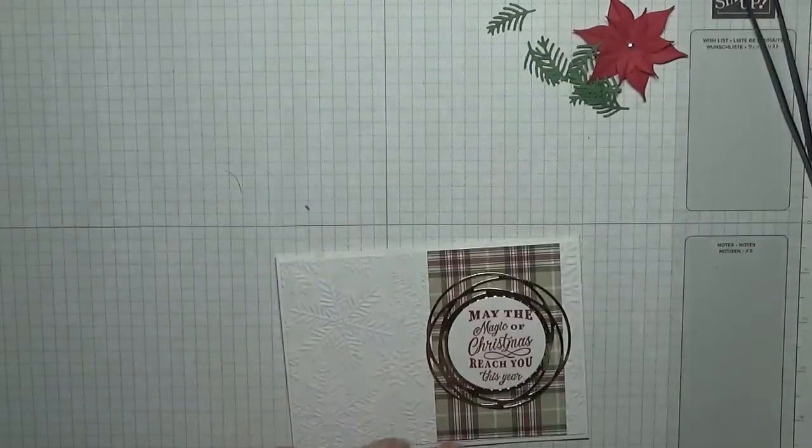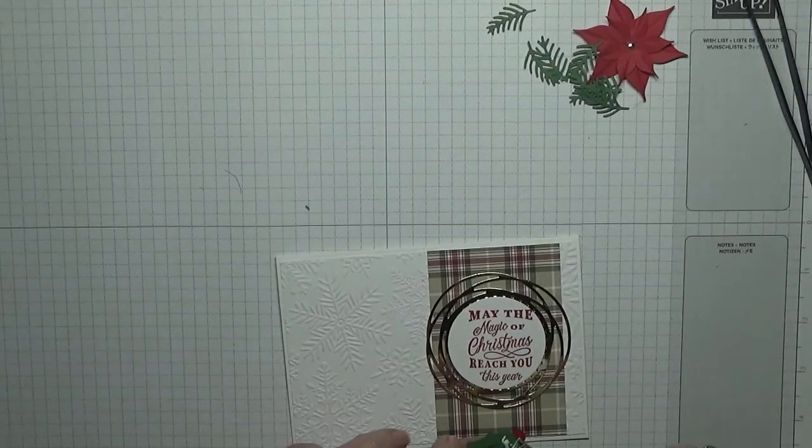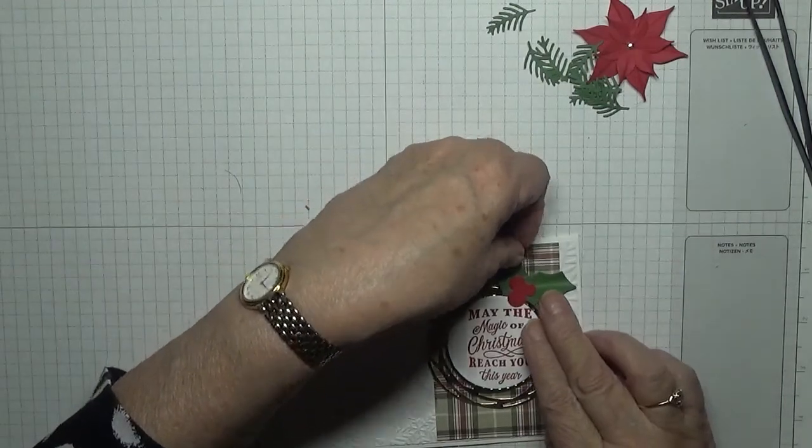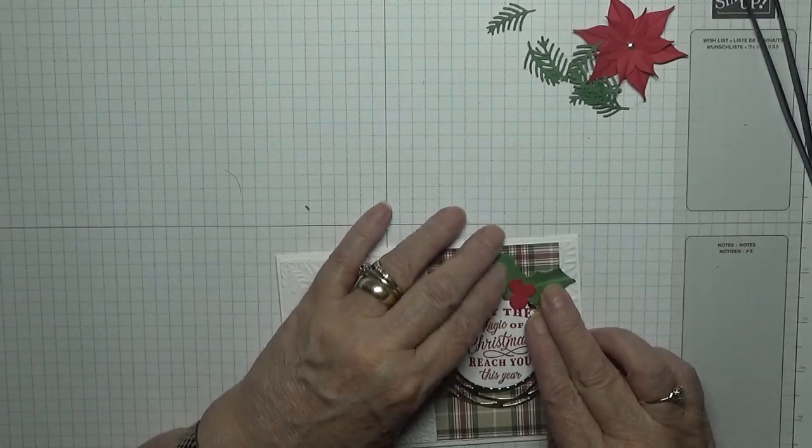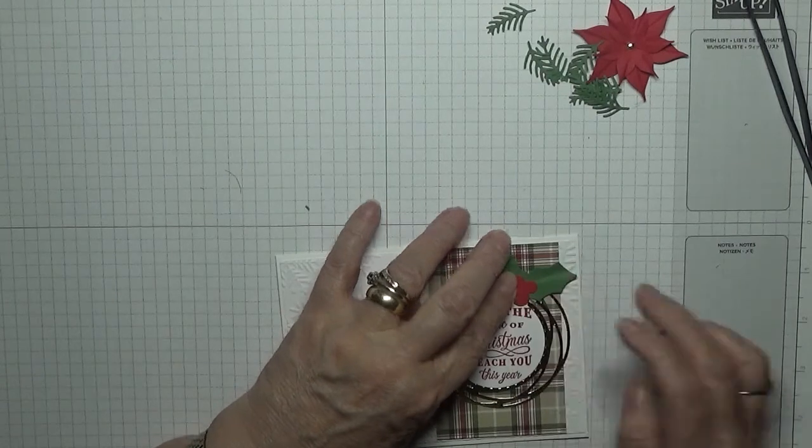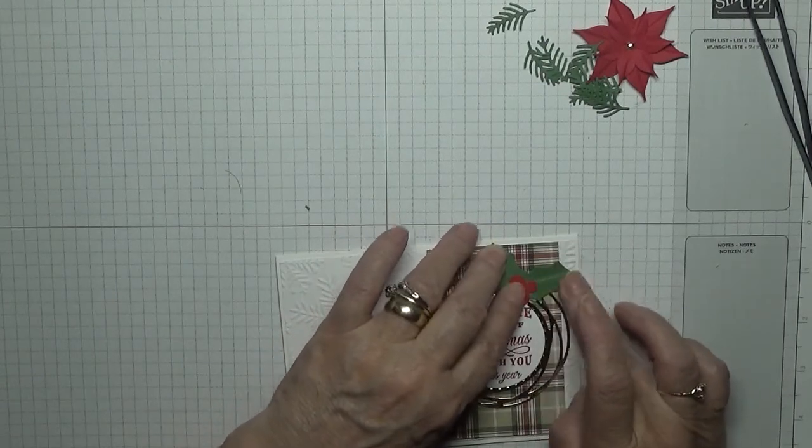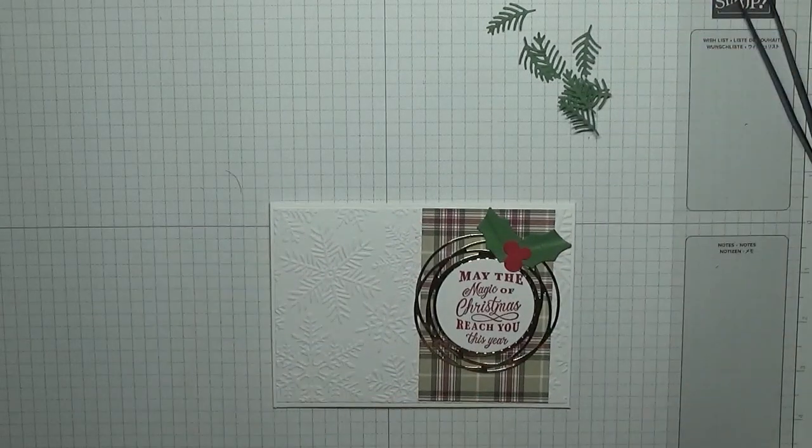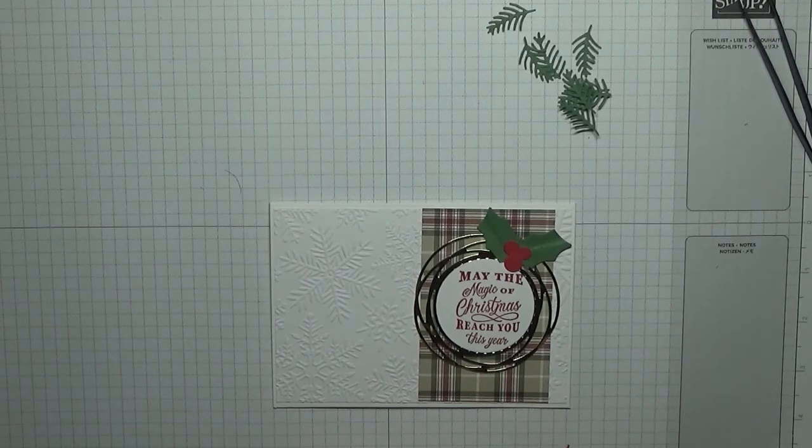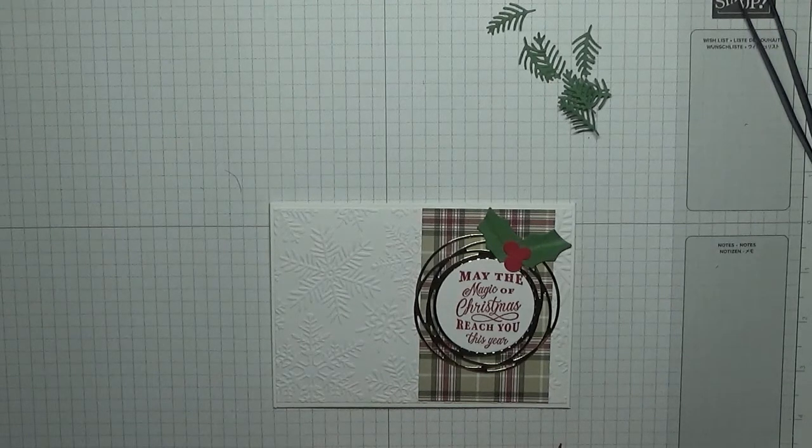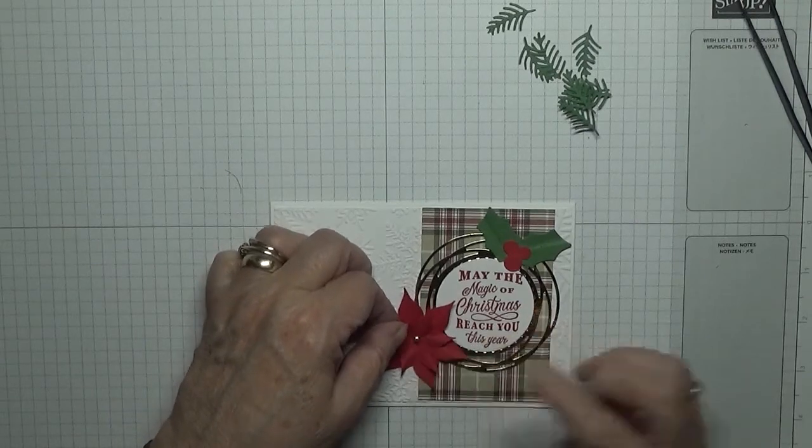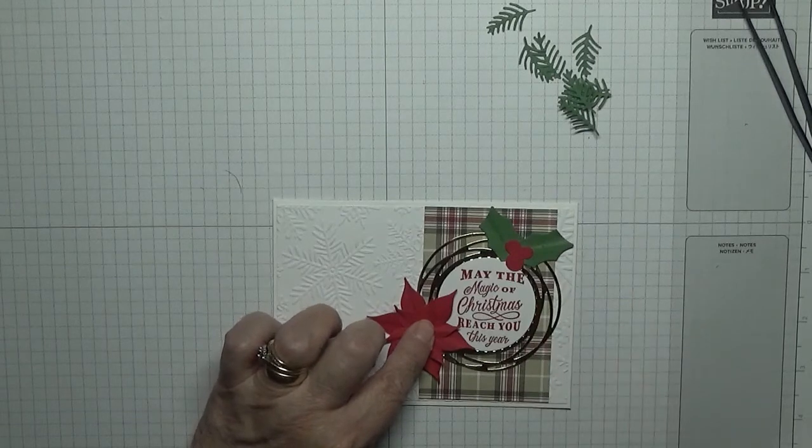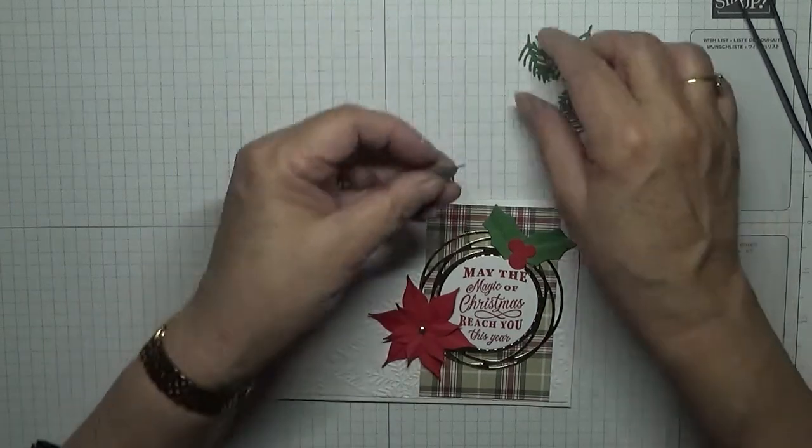And we'll glue that in the center of our paper. And we'll glue our holly up this end so it doesn't come off the paper, off the card and marble. And then our poinsettia, we're going to put down there.